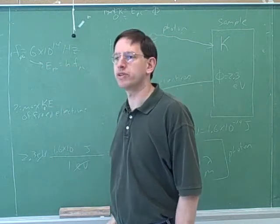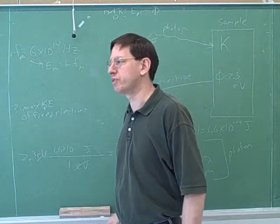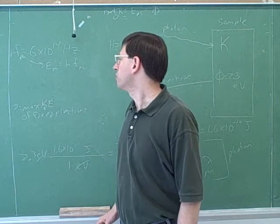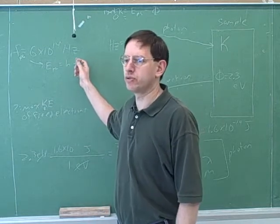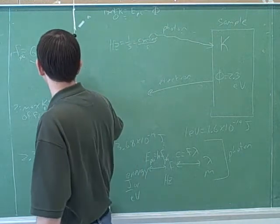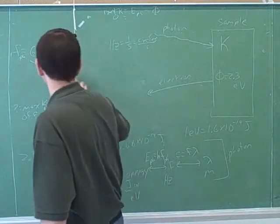It'll come out in joules. We're kind of doing the reverse of the previous problem. In the previous problem, we started with electron volts and had to move into joules. But now in this problem, we're starting with standard units of joules because we're using Planck's constant, which is in joules. So this energy would come out in joules.